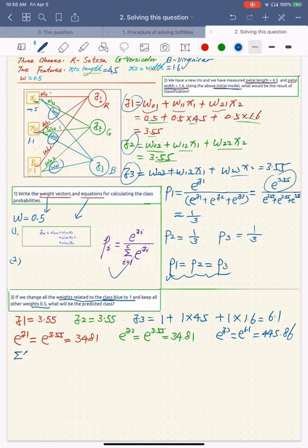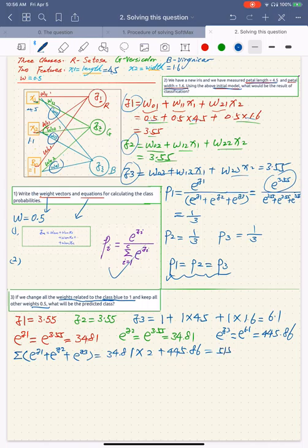So e to the power of z1 plus e to the power of z2, we have 2 of that value, 34.55.86, so we have 515.48, so we got this value.